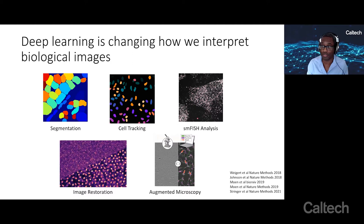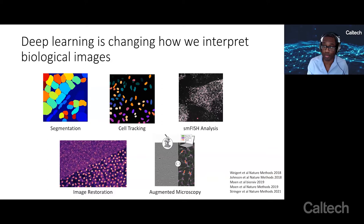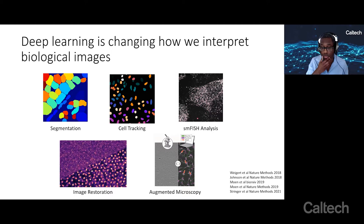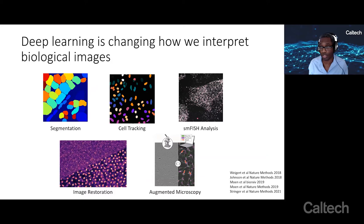Unless you've been living under a rock, you know that artificial intelligence and deep learning methods have transformed our relationship with data. That's particularly true with imaging data. In the life sciences, there are deep learning methods that can do a wide number of tasks with different types of biological imaging data. These include identifying cells in images — cell segmentation — tracking objects, identifying spots in single-molecule FISH images, restoring noisy images, and augmented microscopy, which tries to predict what fluorescence images might look like from label-free images.